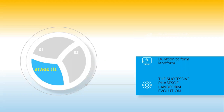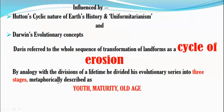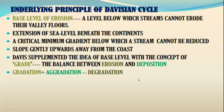Stage refers to the three stages of youth, maturity, and old age, as Davis's model is based on the evolution of landform over time. His cycle of erosion is also based on Hutton's cyclic nature of Earth's history and uniformitarianism concept, and Darwin's evolutionary concept.